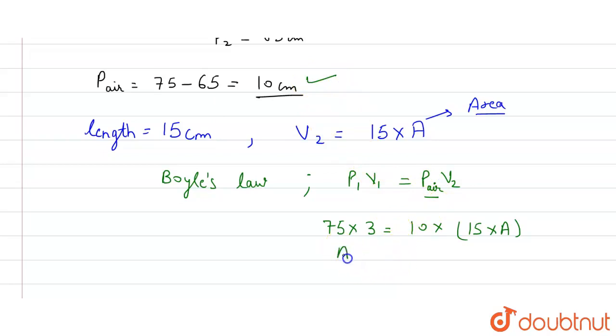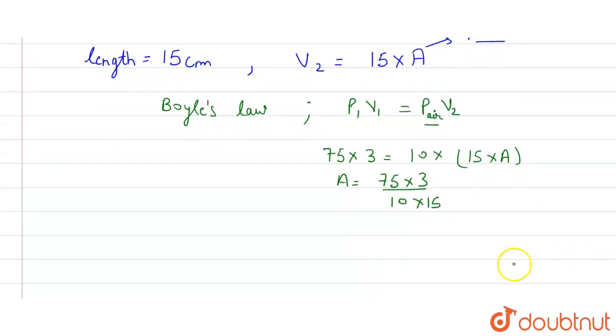So now we have to find the area. We can easily find the area: 75 into 3 upon 10 into 15. If we go to the next step, then we will get the area which will be equal to 1.5 square centimeters.